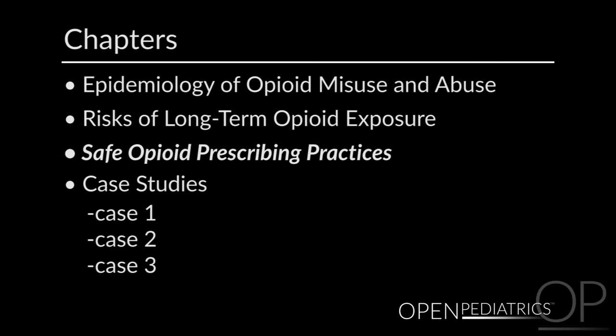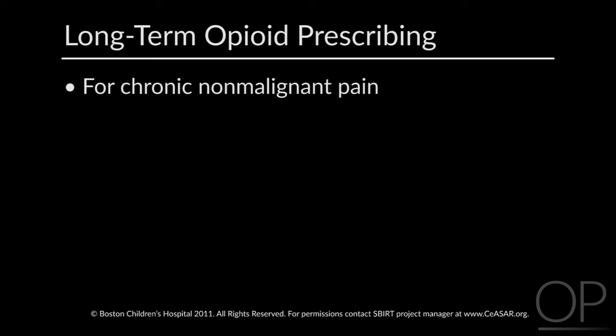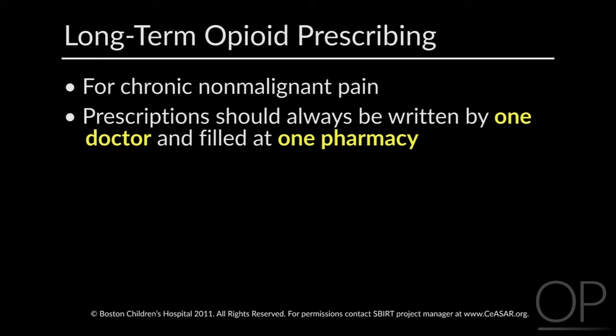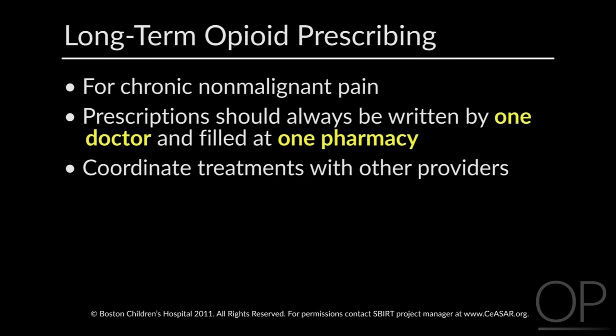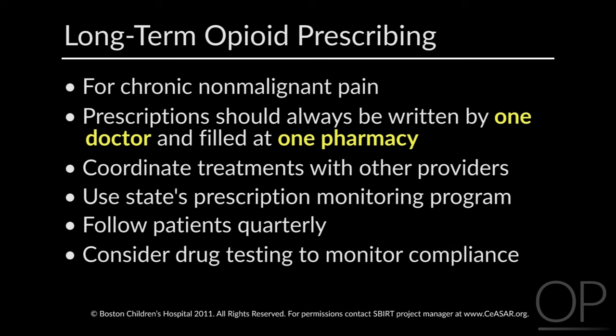Safe opioid prescribing practices. For long-term opioid prescribing for chronic non-malignant pain — patients who need ongoing pain treatment but do not have a life-threatening condition — opioid prescriptions should always be written by one doctor and filled at one pharmacy. Treatment should be coordinated with other providers. Physicians should use their state's prescription monitoring program when available. Stable patients should be seen at least quarterly, and physicians should consider drug testing to monitor for compliance — confirming the prescribed drug is present in urine and that illicit drugs are not.